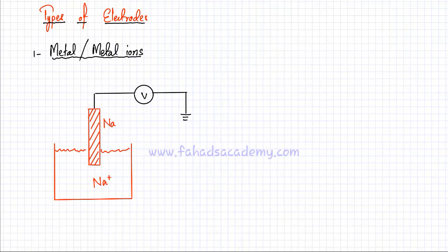In this lecture we're going to discuss the types of electrodes. We have multiple different types of electrodes that we can create to figure out what the potential, or E-nought, of that particular electrode is. That would give us an idea of the tendency of that particular reaction to gain electrons or to lose electrons. A higher potential has a higher tendency to gain electrons, whereas a lower potential has a higher tendency to lose electrons.